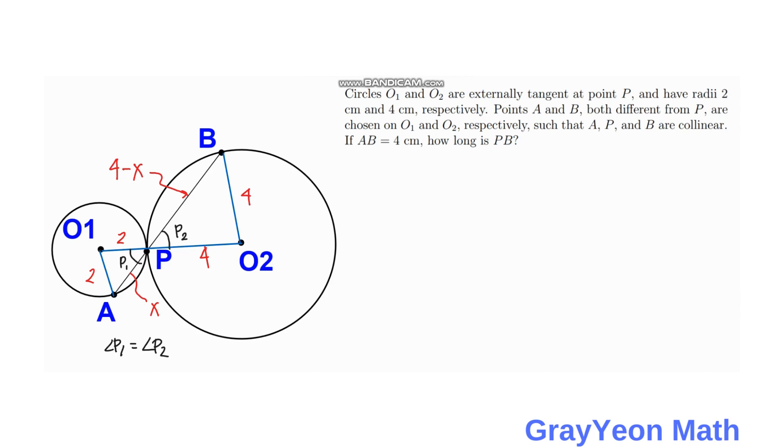Okay, so next thing is we need to focus on triangle O1PA. So angle P1 is opposite of side O1A. And the length is O1A and the length is 2 cm and it corresponds to P1.